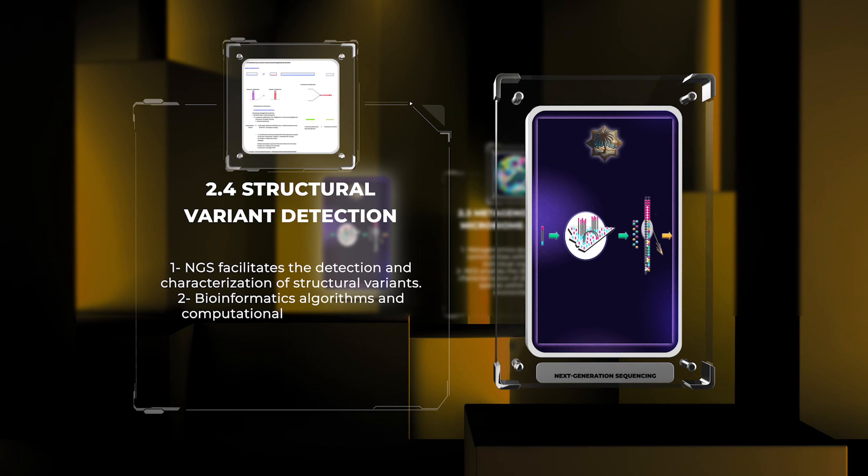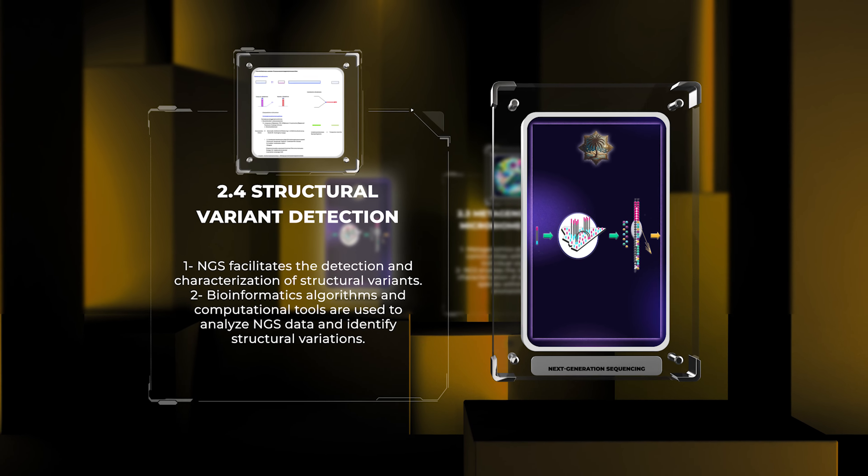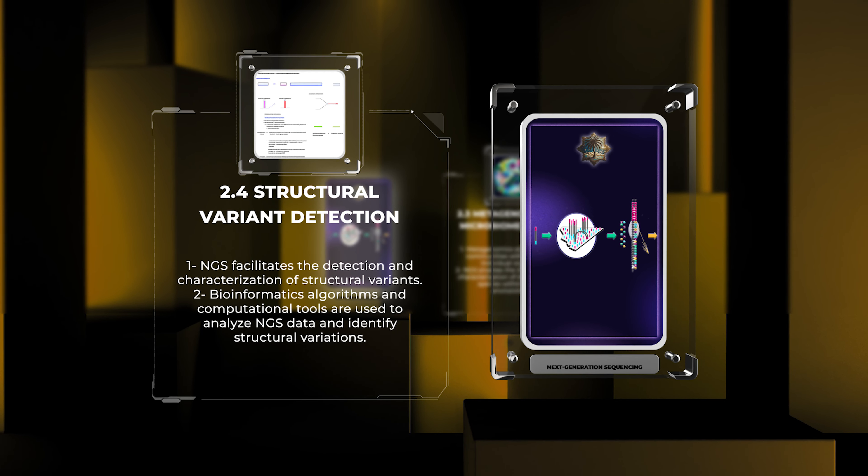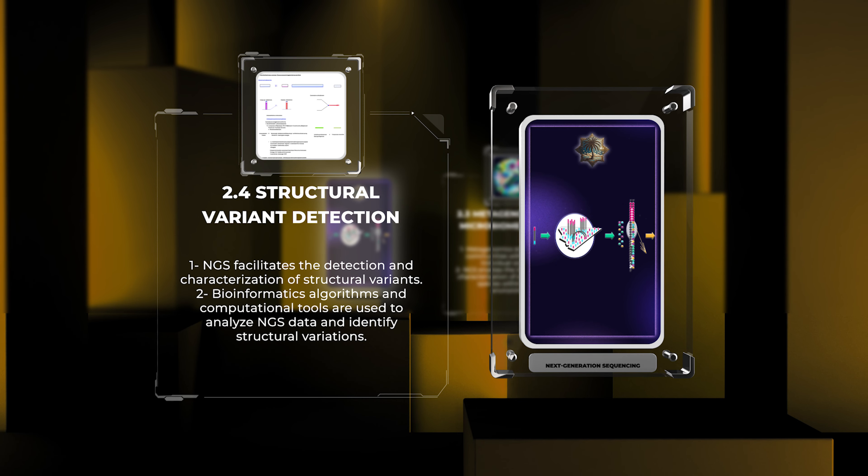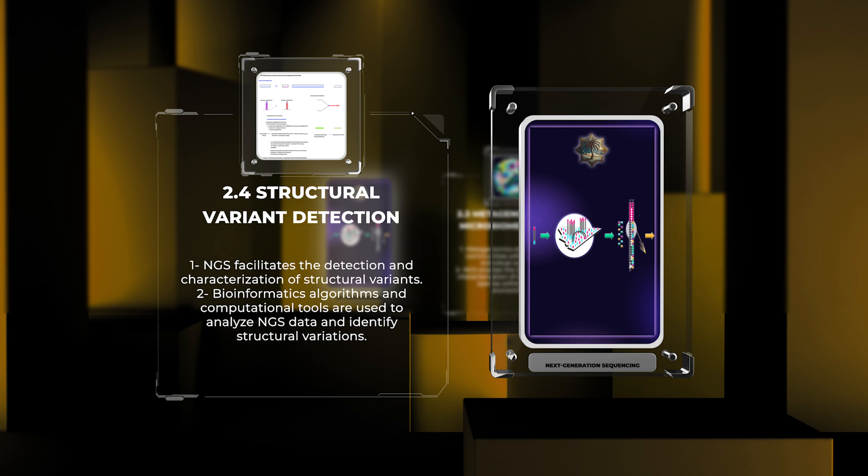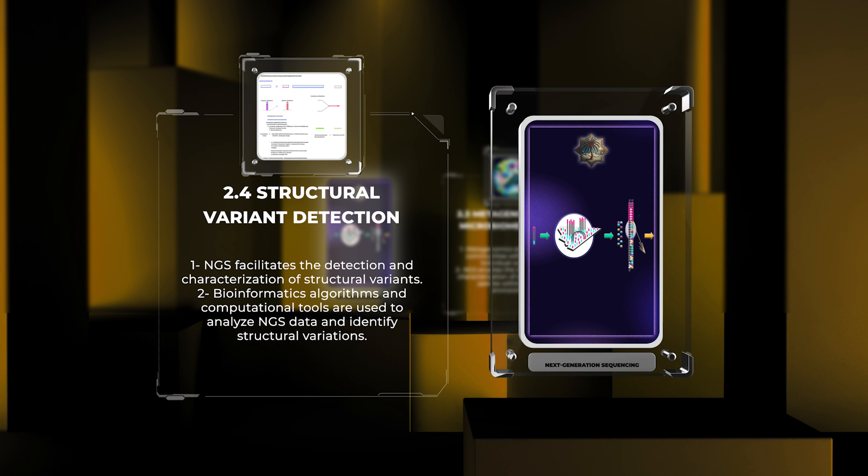Structural variants, including insertions, deletions, inversions, and translocations, play a crucial role in genomic diversity and disease susceptibility. NGS facilitates the detection and characterization of these structural variants with high accuracy and resolution.